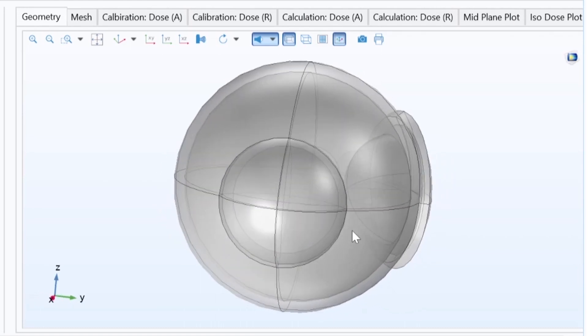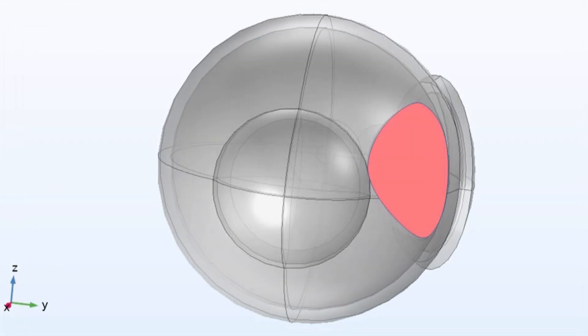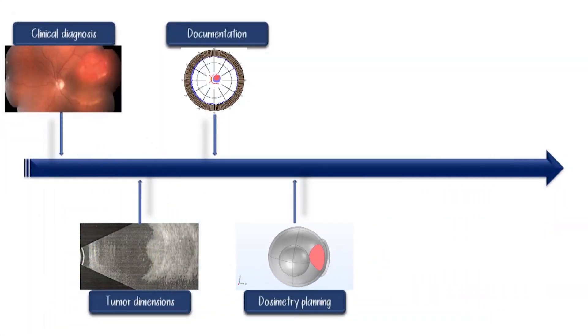In our case, as per the dose calculations at 6 mm depth and dose of 3500 centigrade, a dose rate of 169.08 centigrade per hour was calculated.